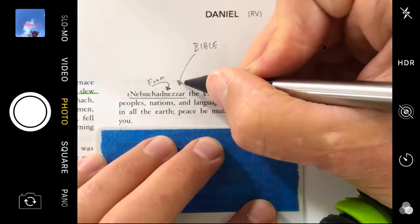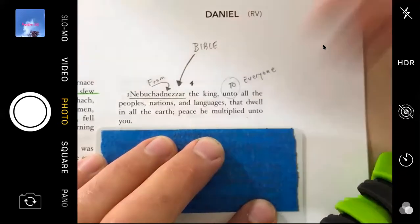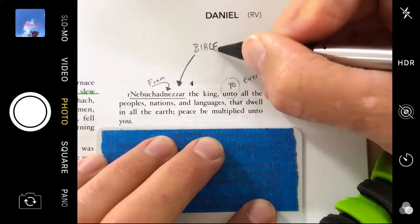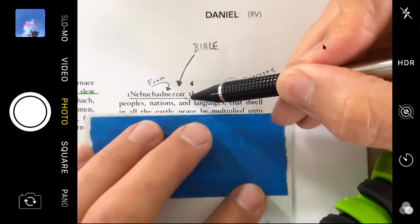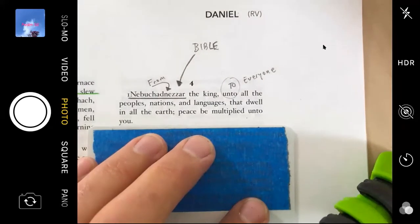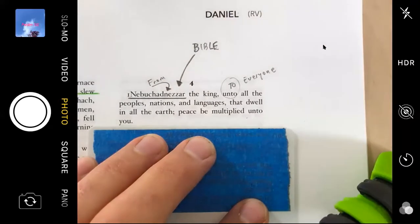Now, he might not have been the one actually doing the handwriting, but I really think he did it. But a book of the Bible is by a foreign king. Isn't that interesting? It's not about a foreign king. Well, it is about him, but he is the guy that wrote it. This is really interesting. Why would God let somebody like him write a chapter in the Bible? Well, let's see.